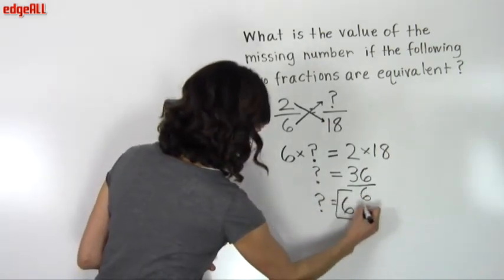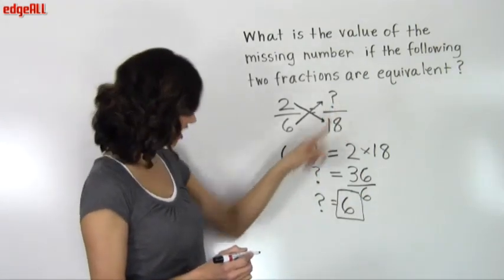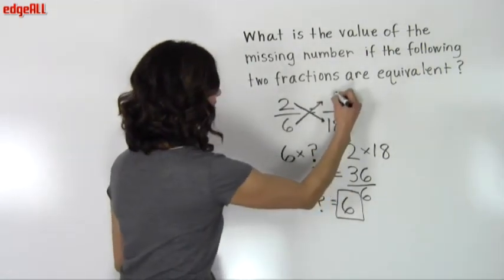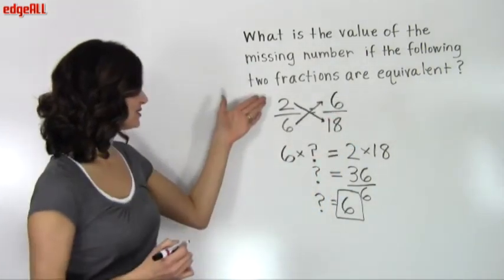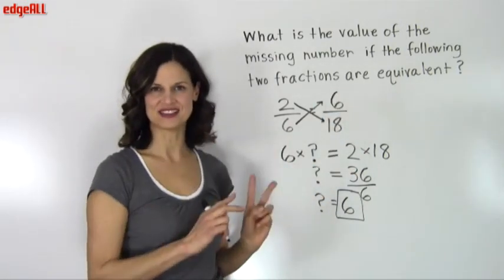And so the number that we're looking for, this unknown number here in our fraction, this unknown numerator, we can write it in now. It's the number 6. So 2/6 and 6/18 are equivalent fractions.